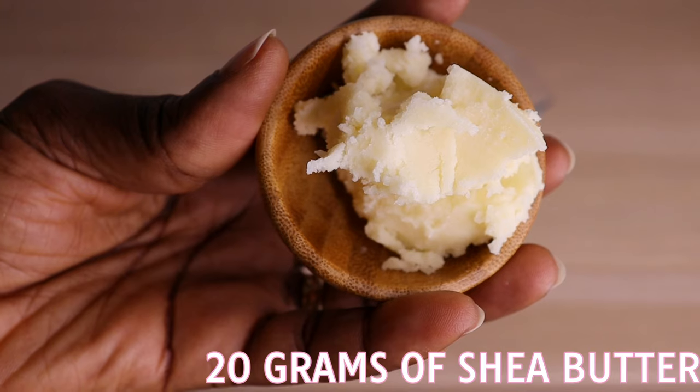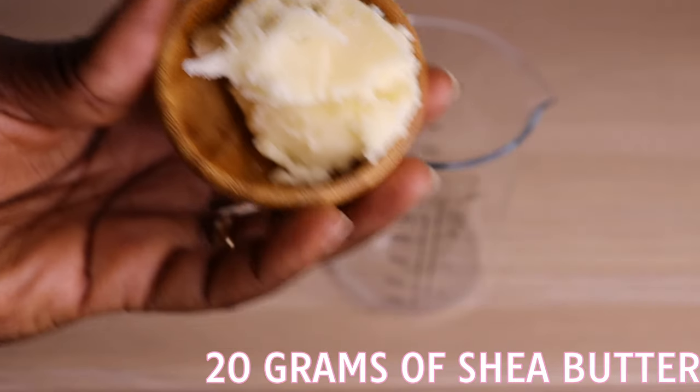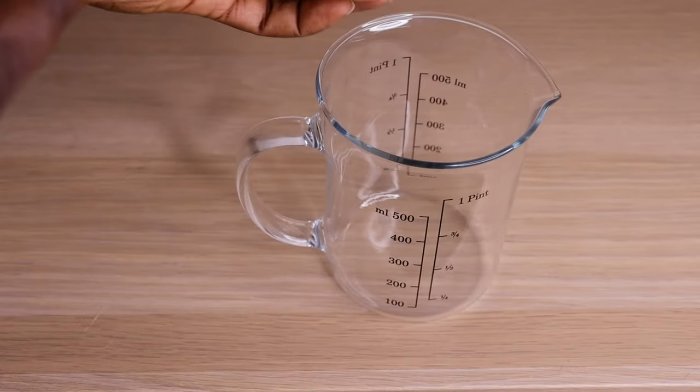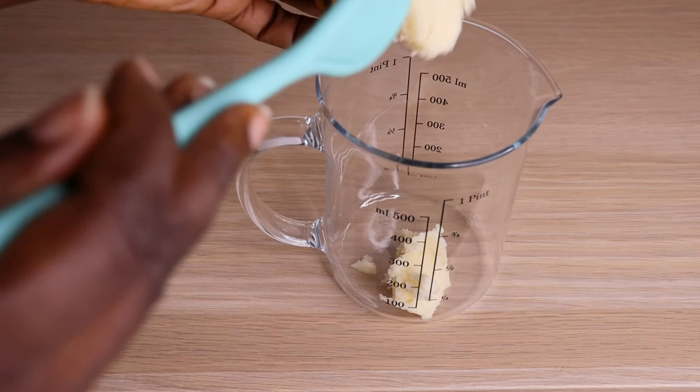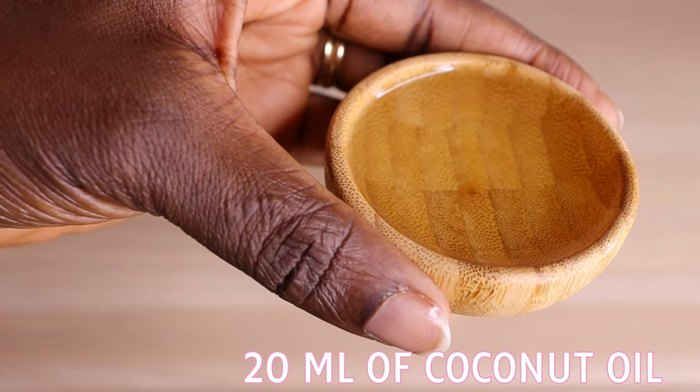My next ingredient will be my shea butter. I will need 20 grams of shea butter. You can apply any butter of your choice, but shea butter is good for my skin. Then I'll go in with 20 ml of my coconut oil and apply it into my jar.